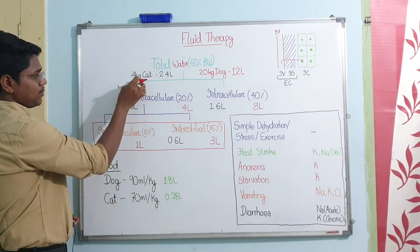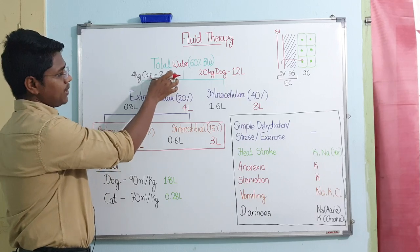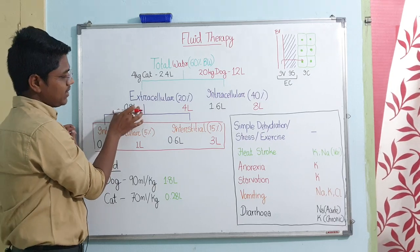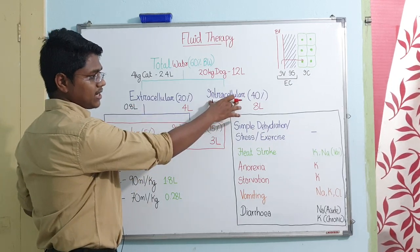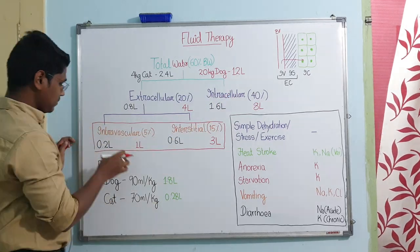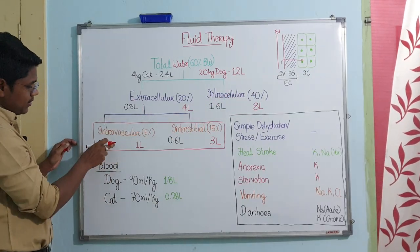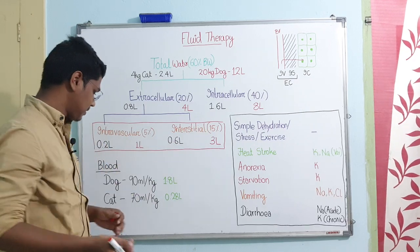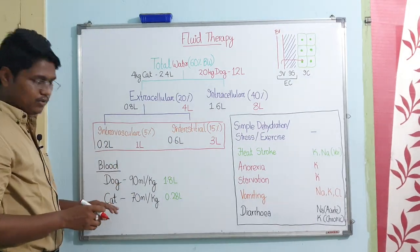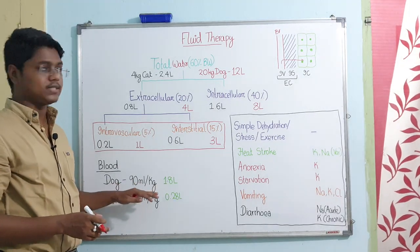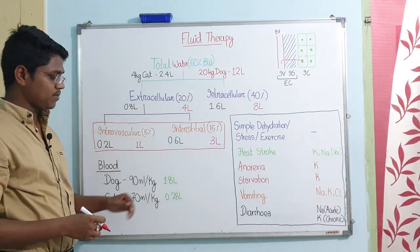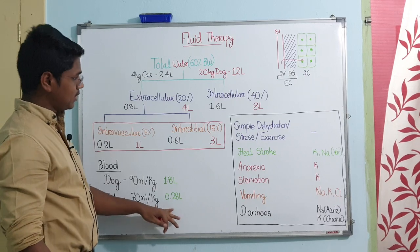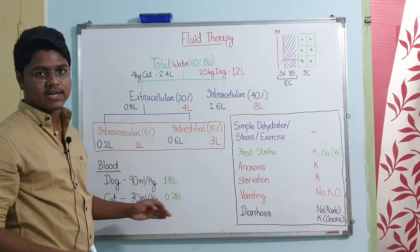Let us take an example of a cat also. Suppose there is a 4 kg cat. So 2.4 liters will be water, which will further subdivide into 0.8 liters extracellularly and 1.6 liters intracellular. This 0.8 liters will be subdivided into 200 ml of intravascular volume and 600 ml of interstitial water. For blood volume calculation - the thumb rule: dog is 90 ml per kg, so a 20 kg dog has 1.8 liters of blood. Cat is 70 ml per kg, so a 4 kg cat has 280 ml of blood.